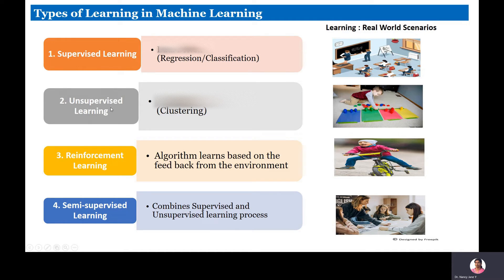For unsupervised learning, consider a child given a task without a supervisor or elder. The child is asked to look at objects and match and group them by color. The child picks and groups objects based on similarity. By doing a self-directed similarity check, the child learns on their own — that is unsupervised learning.